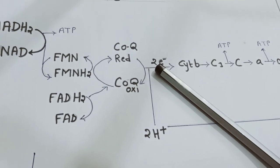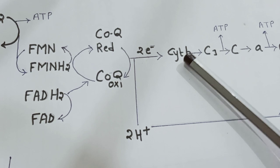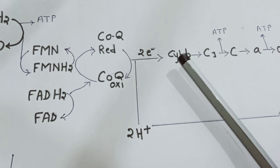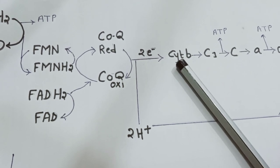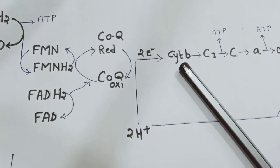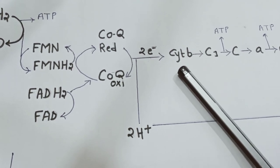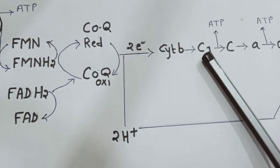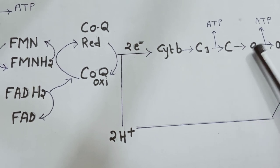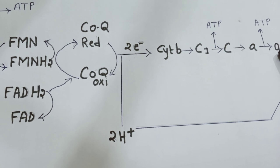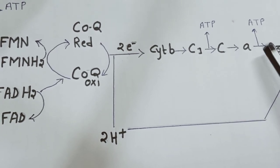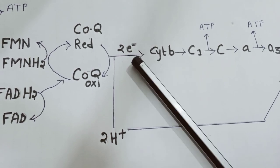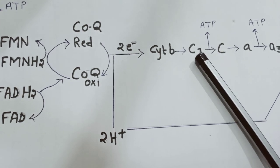The electrons from this process are transported — or rolled down — through the cytochrome system. Cytochromes are electron carriers helpful in both photosynthesis and respiration. In respiration, the cytochromes involved are cytochrome b, cytochrome c1, cytochrome c, cytochrome a, and cytochrome a3. These together are known as the electron transport system.